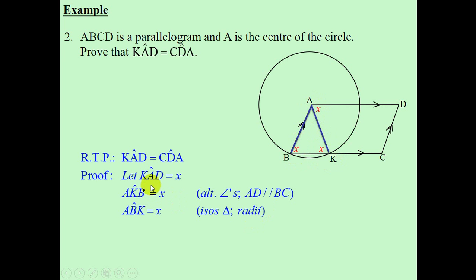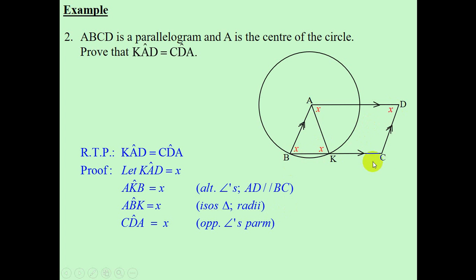Now, remember what our goal is — we want to prove that KAD is equal to CDA. Looking for CDA, is that angle equal to X? Most certainly. We have angle B which is equal to X, therefore CDA is X, and the reason is opposite angles of a parallelogram are equal. So we started with KAD equal to X, we now have CDA equal to X, and we can conclude that KAD is equal to CDA.